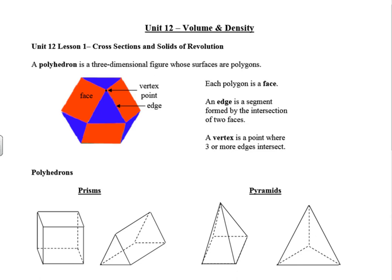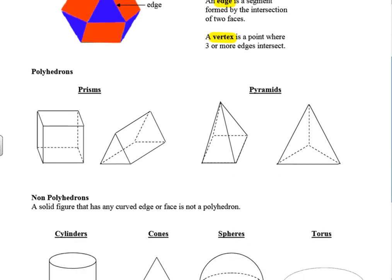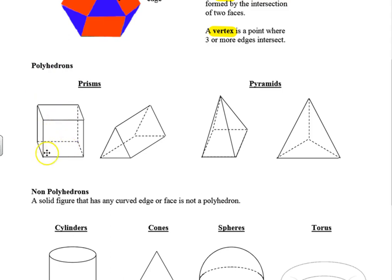The first term is a polyhedron, which is a three-dimensional figure whose surfaces are polygons. Each polygon has a face. An edge is the segment formed by the intersection of two faces, and a vertex is a point where three or more edges intersect. Polyhedrons include prisms like a rectangular prism and a triangular prism, and pyramids defined by their base, like a square pyramid or a triangular pyramid.